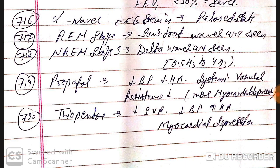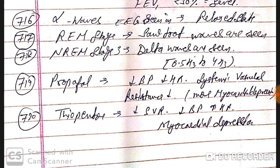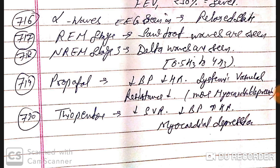Alpha waves on EEG are seen in the relaxed state. Sawtooth waves are seen in REM (rapid eye movement) stage. Non-REM stage 3 shows delta waves at 0.5 to 4 Hz.